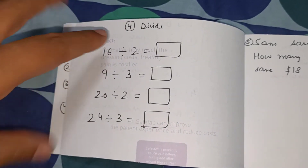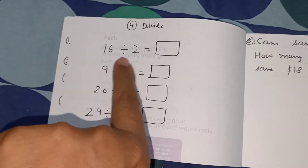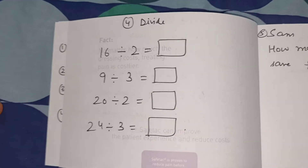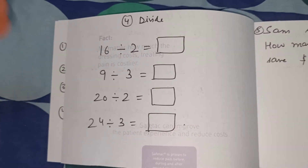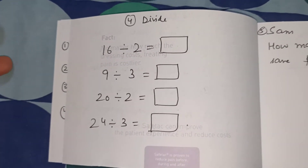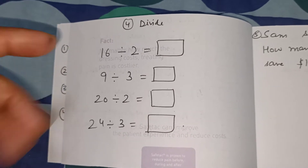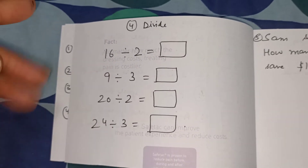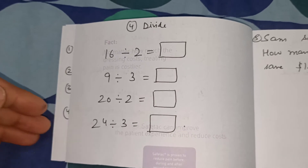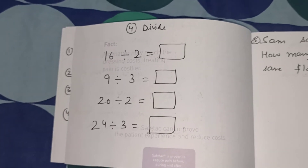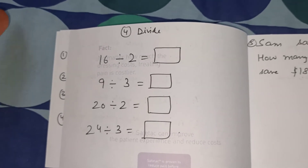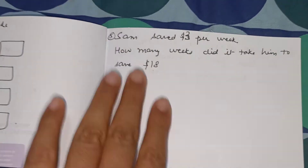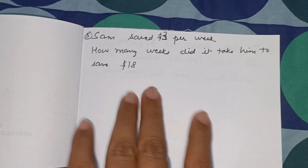How many times do you skip 2 to get to 16? You do it 8 times, so 16 divided by 2 is 8. We talk about what division practically means and why we learned skip counting. So 2 tens are 20, 3 threes are 9, 3 eights are 24 — that's the reason we learned skip counting by 2 and 3, so we could start with division. Later on they will figure out more division questions.